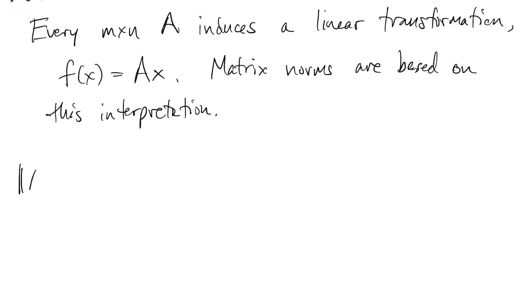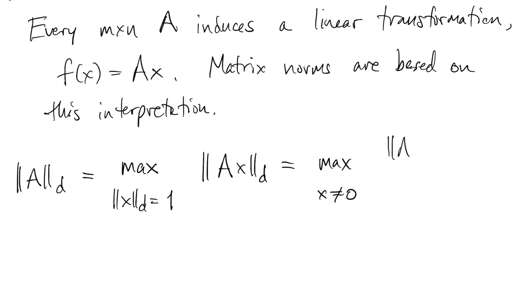So the d-norm of a matrix A is the maximum over all unit vectors in the d-norm of the norm of the transform vector A times x. Now because of the scaling properties of norms, we could also write that it's the ratio of norm of Ax over norm x for all nonzero vectors x. We call this an induced matrix norm. The d-norm of a matrix is induced by the vector d-norm.